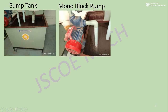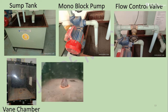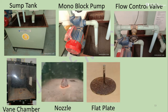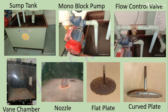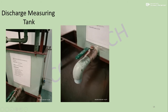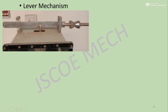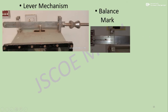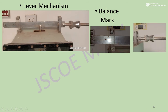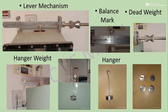Now we will see each one: sump tank, monoblock pump, flow control valve, vane chamber, and nozzle. This is the flat plate, and this is the curved plate. The inclined plate is already attached to the vane chamber. Discharge measuring tank — here is the discharge valve, this is the discharge scale, this is the lever mechanism, this is the balance mark, dead weight or balance weight, this is the hanger weight, and these are the weights.